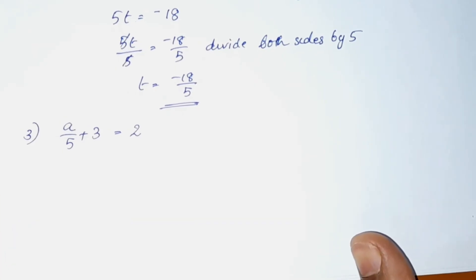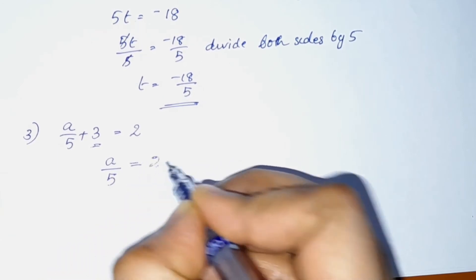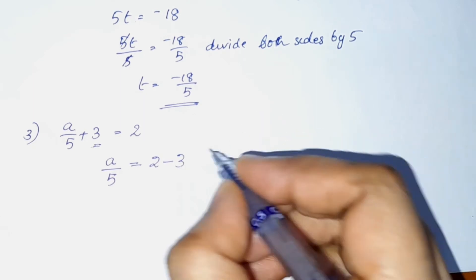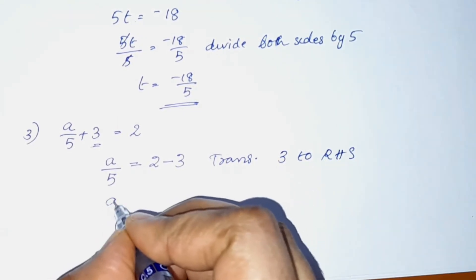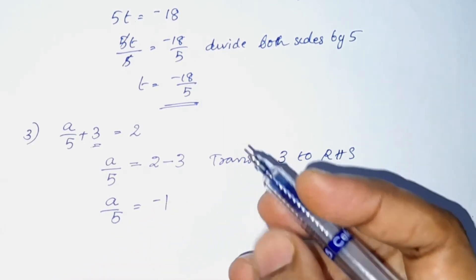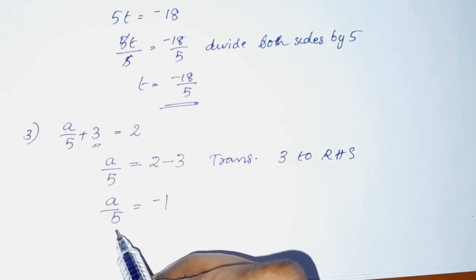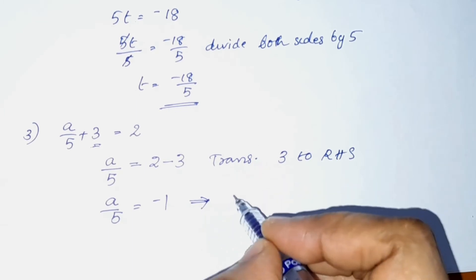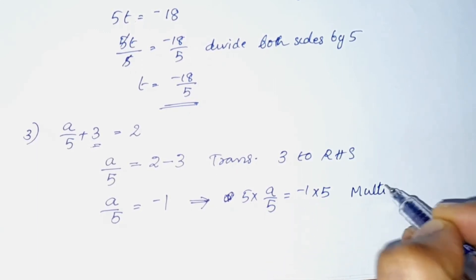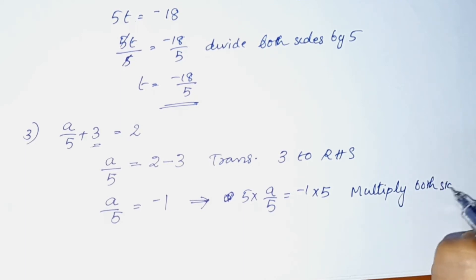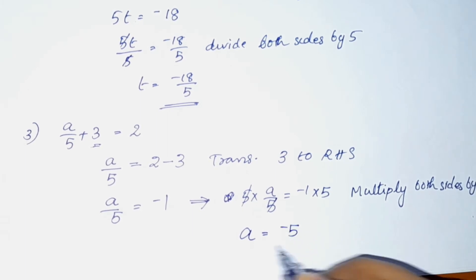The next equation: a by 5 plus 3 is equal to 2. Transposing 3, we get a by 5 is equal to 2 minus 3, which is negative 1. So a by 5 is equal to negative 1. Multiplying both sides by 5, 5 and 5 cancel, so a is equal to negative 1 into 5, which is negative 5. This is the solution.